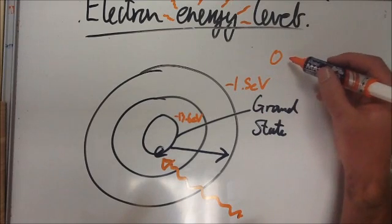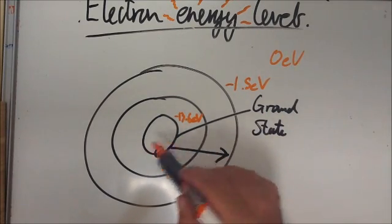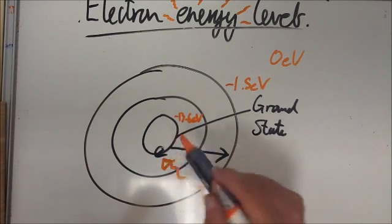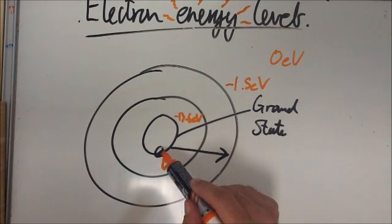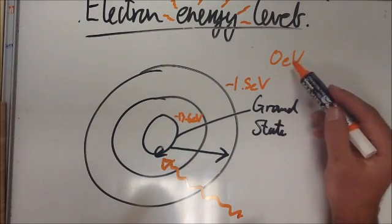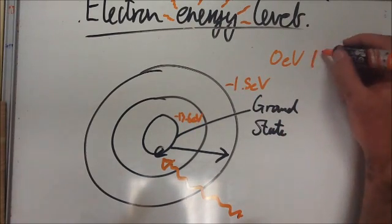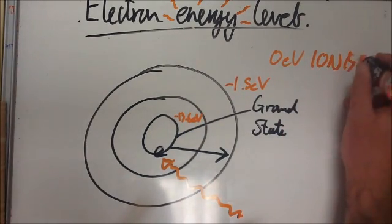When you get to zero, we're really talking about ionization. So to get this electron ionized away from the metal or whatever it is, this electron would need to absorb a photon equal to, sorry, 13.6 electron volts to get all the way to here in order to be ionized.